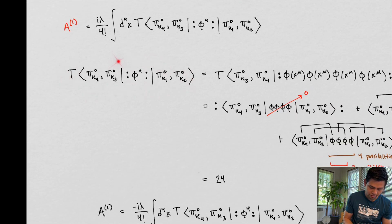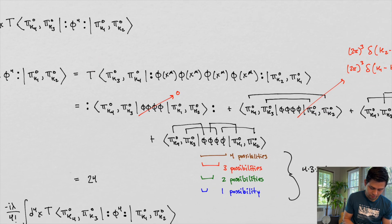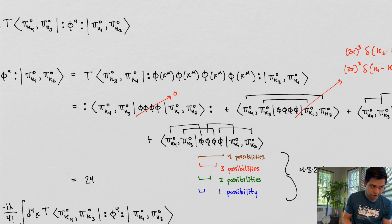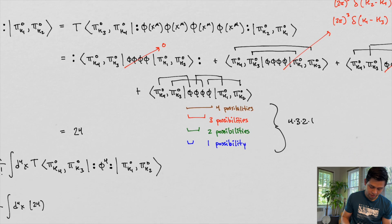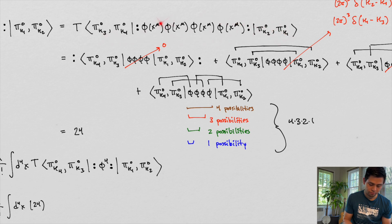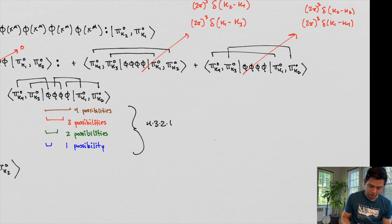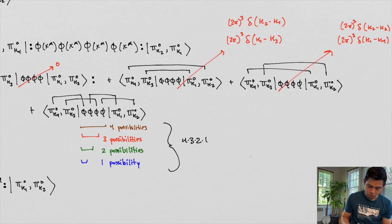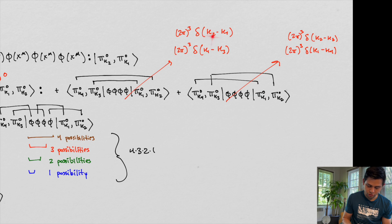The time-ordered expression of this first-order term expands the fourth power explicitly. Then we apply Wick's theorem: the time-ordered product equals the normal-ordered term plus all the contractions. Some of those contractions — specifically between K2 and K4, and K1 and K3 — are going to go to zero.